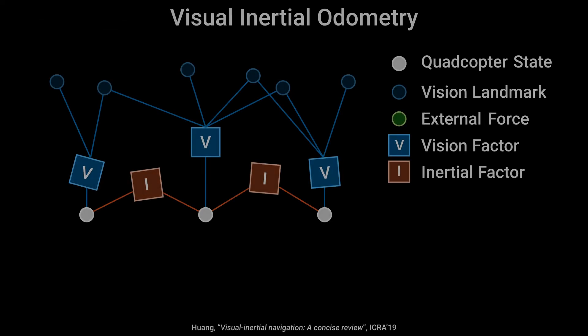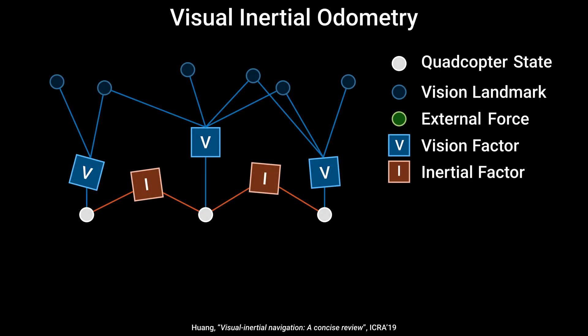This factor graph shows how a standard tightly coupled VIO system operates. It fuses vision factors obtained through feature tracking and inertial factors obtained from the IMU to estimate the quadrotor state along with the IMU biases.